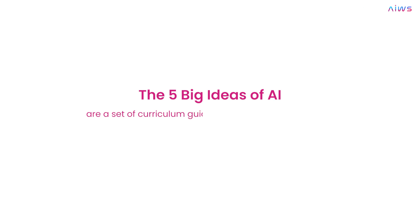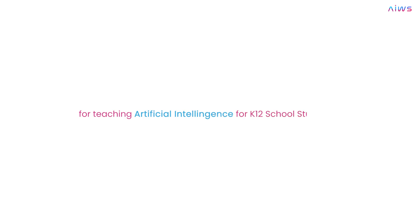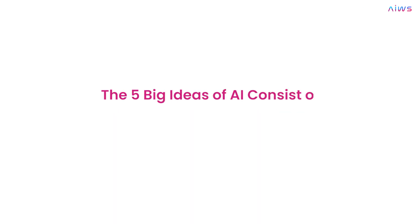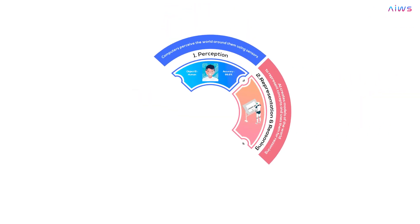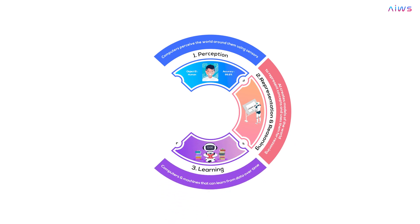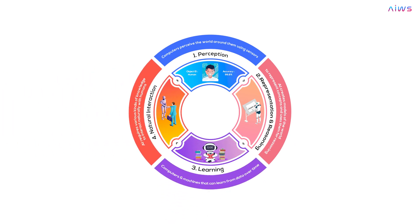The five big ideas of AI are a set of curriculum guidelines proposed by the US-based AI4K12 initiative for teaching artificial intelligence for K12 school students. The five big ideas of AI consist of: 1. Perception, 2. Representation and reasoning, 3. Learning, 4. Natural interaction, 5. Impacts of AI.